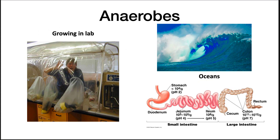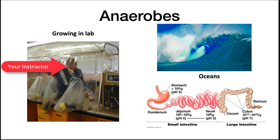Due to the presence of oxygen in our atmosphere, you may wonder how common anaerobic environments are. They actually turn out to be very common. Below about 100 meters, the ocean has very little oxygen. This is true of many aquatic lakes if they are deep enough. The intestines of many animals also do not contain oxygen. To grow these microbes in the laboratory, specialized equipment is needed, such as the glove box shown at left.